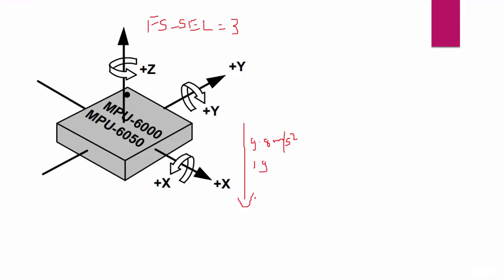Let's say we have chosen full-scale range equal to 3. So that means I have selected this. Now if I measure the reading at z-axis then I should be measuring 2048. So if I connect my MPU to my microcontroller and if I measure the reading at z-axis then it should be 2048.